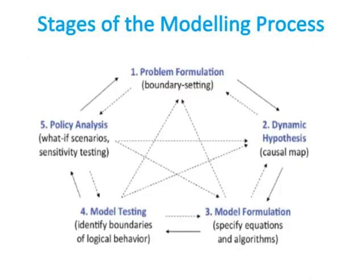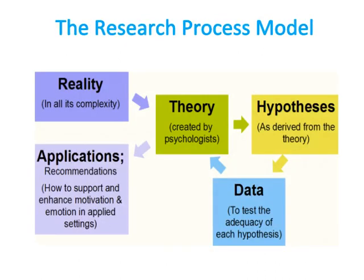Stages of the modeling process: the modeling process is depicted as an iterative sequence of five steps — problem formulation, boundary setting, dynamic hypothesis, model formulation, and model testing and policy analysis. A research process is a means to answer questions that cannot be answered otherwise, and the researcher needs to follow a step-by-step plan to execute the research. These steps are also called the research model.